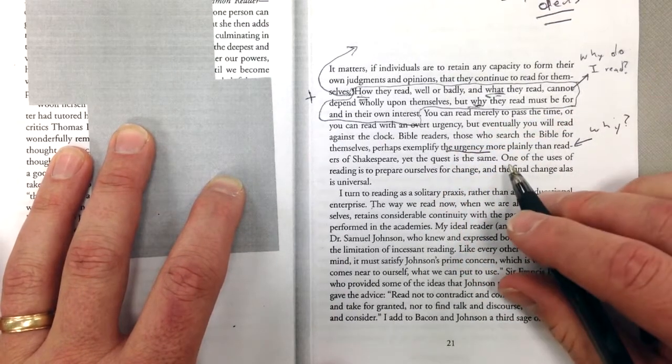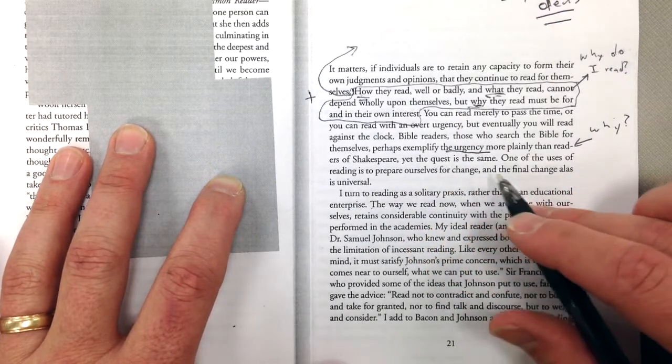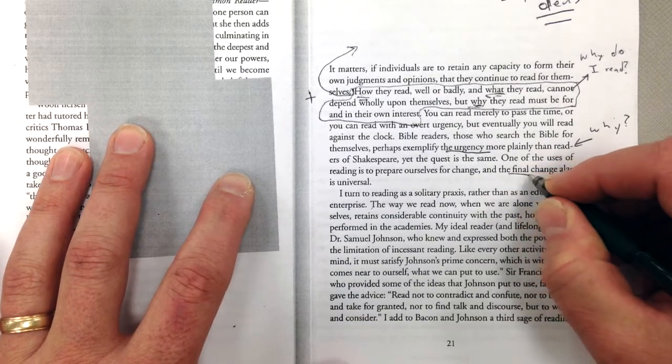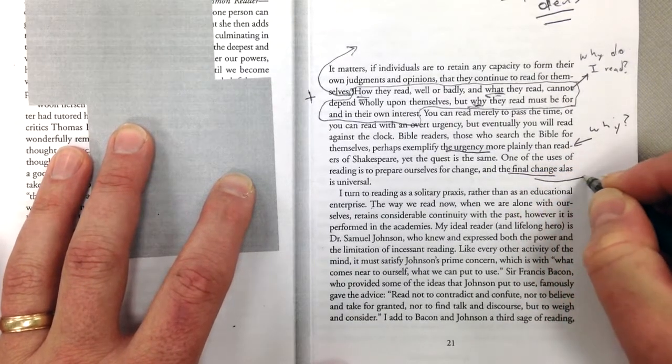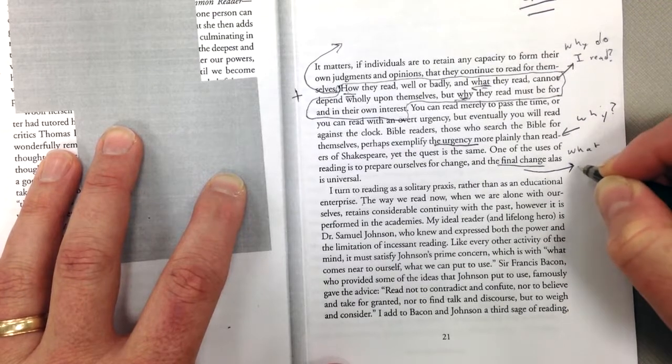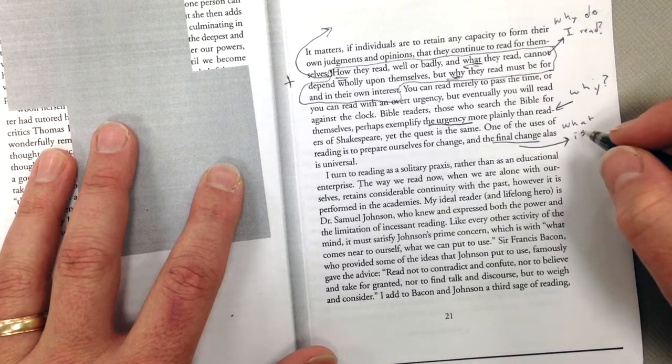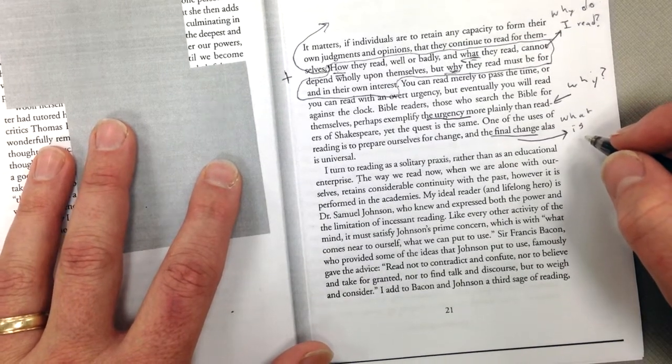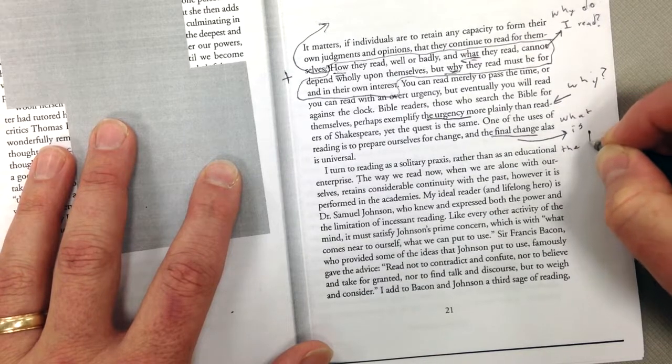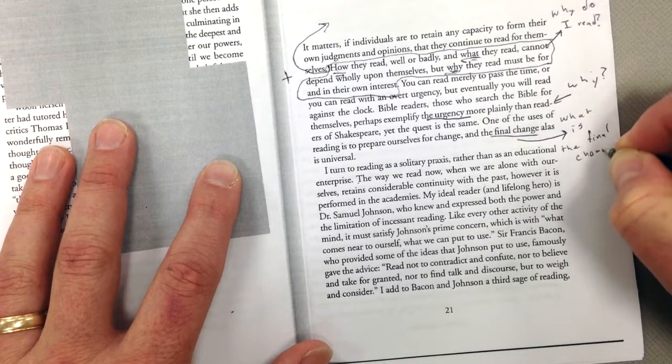And then at the end here, one of the uses of reading is to prepare ourselves for change. And the final change, alas, is universal. What is the final change? And it's kind of like once you, and it's something specific. He's not talking about, it's not like a big metaphor for something. It's something specific. It's a word.